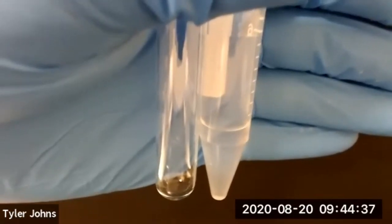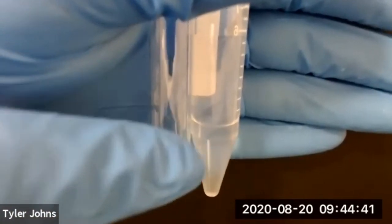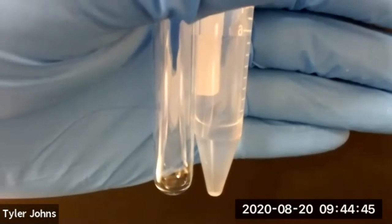Once the layers have completely separated, we'll transfer the bottom organic layer to a clean test tube using a pasture pipette.